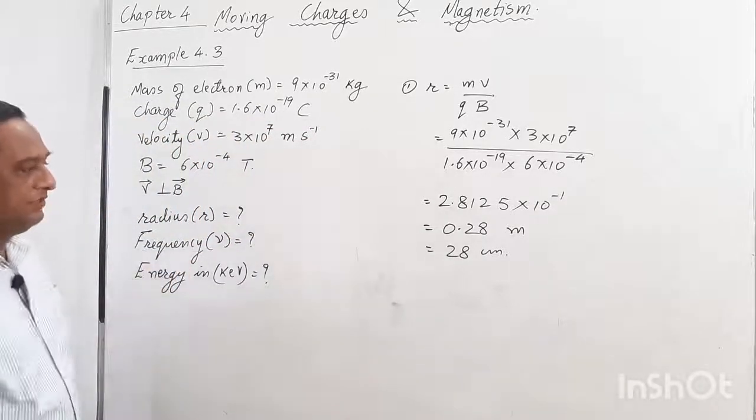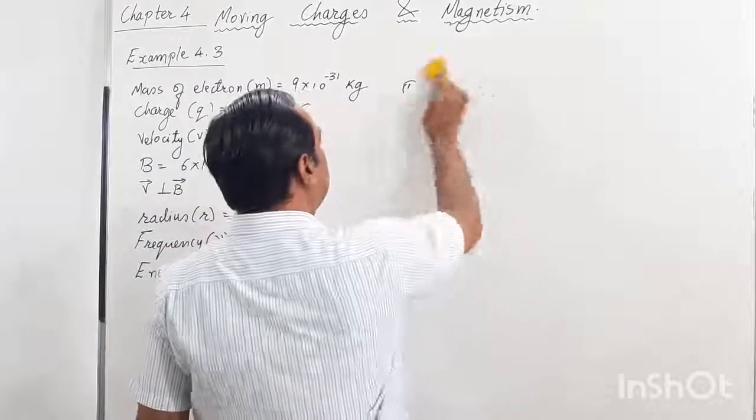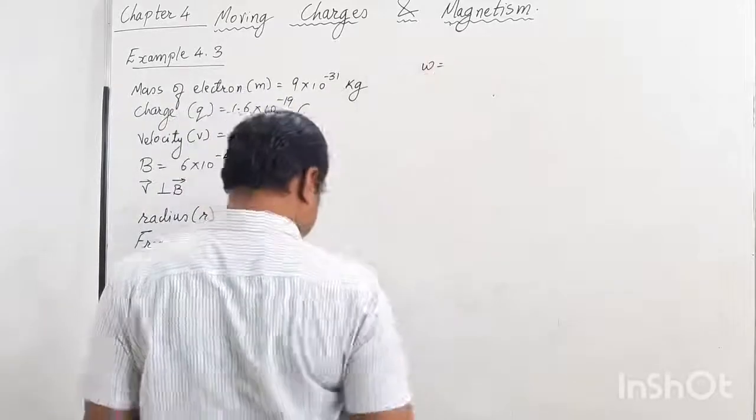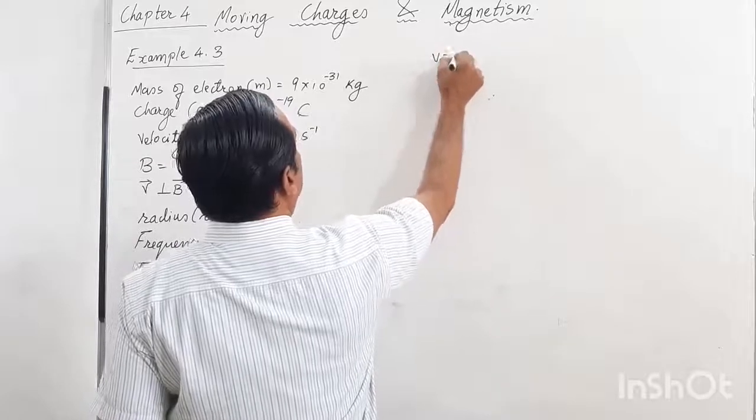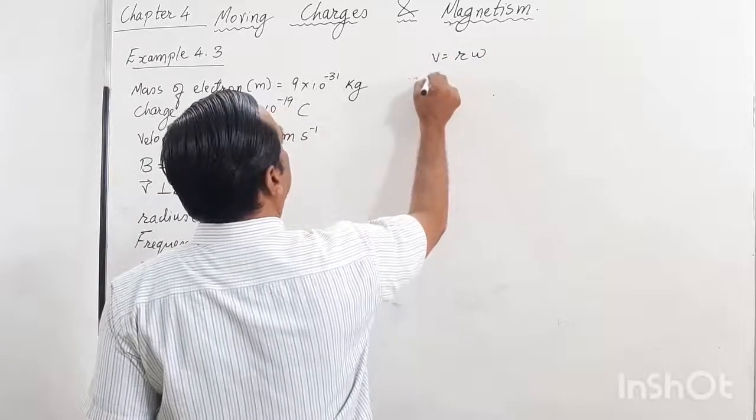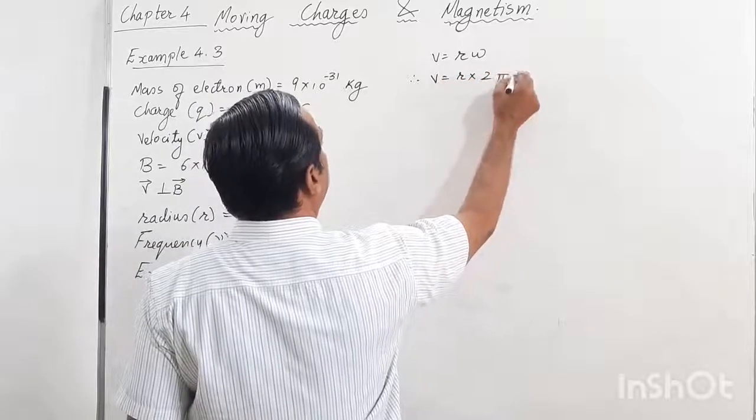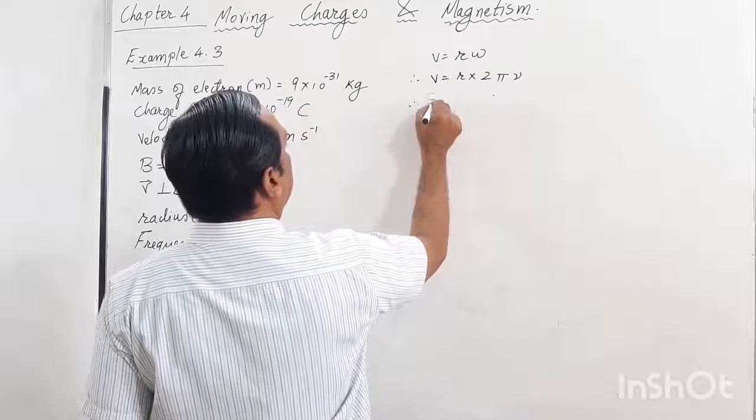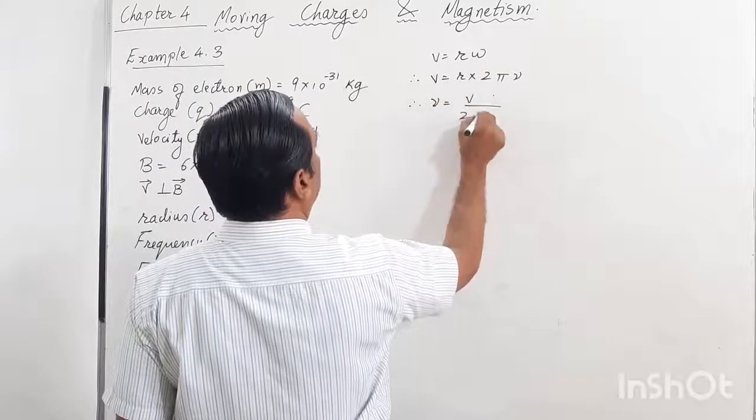Now we need to find the frequency. The frequency formula: we know v = rω, so v = r×2πf. Therefore, frequency ν = v/(2πr).